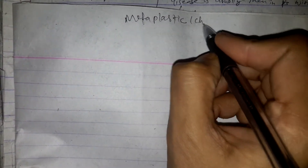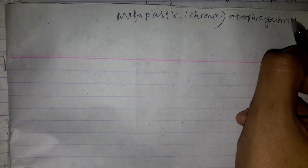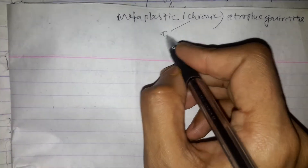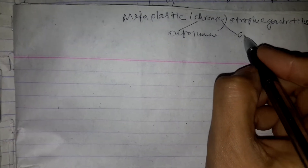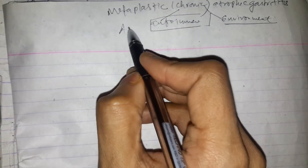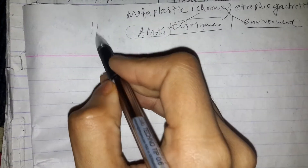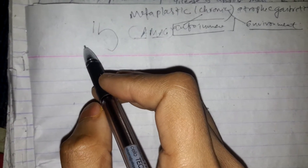Let's discuss metaplastic atrophic gastritis. Metaplastic chronic atrophic gastritis has two forms: one is autoimmune and the other is environment related. Here we are going to discuss autoimmune metaplastic atrophic gastritis, abbreviated as AMAG. It is a form of metaplastic chronic gastritis that results in replacement of the normal oxyntic mucosa in the gastric corpus by atrophic and metaplastic mucosa.